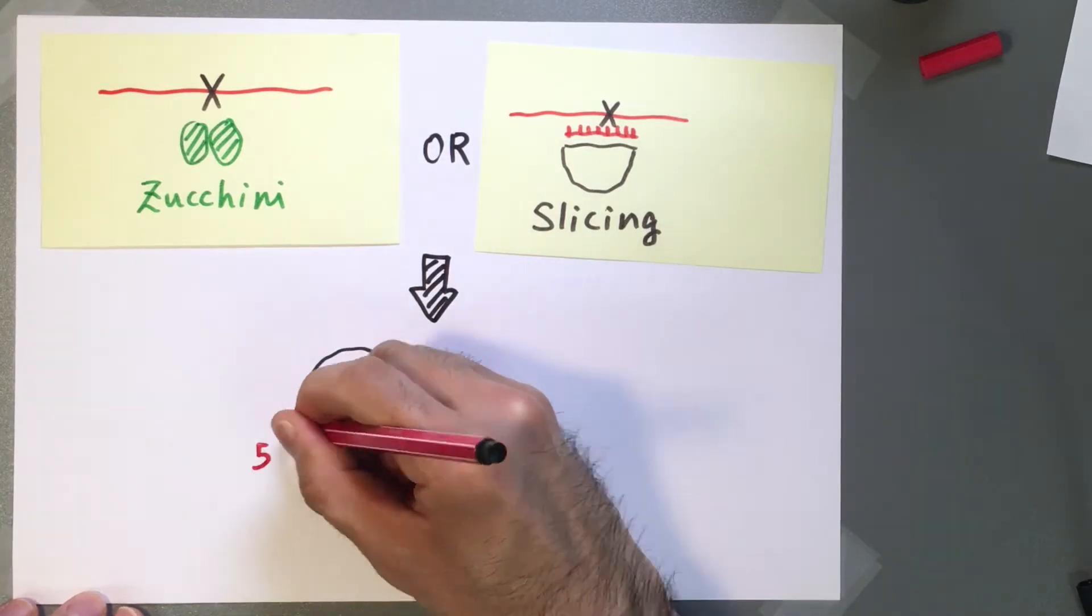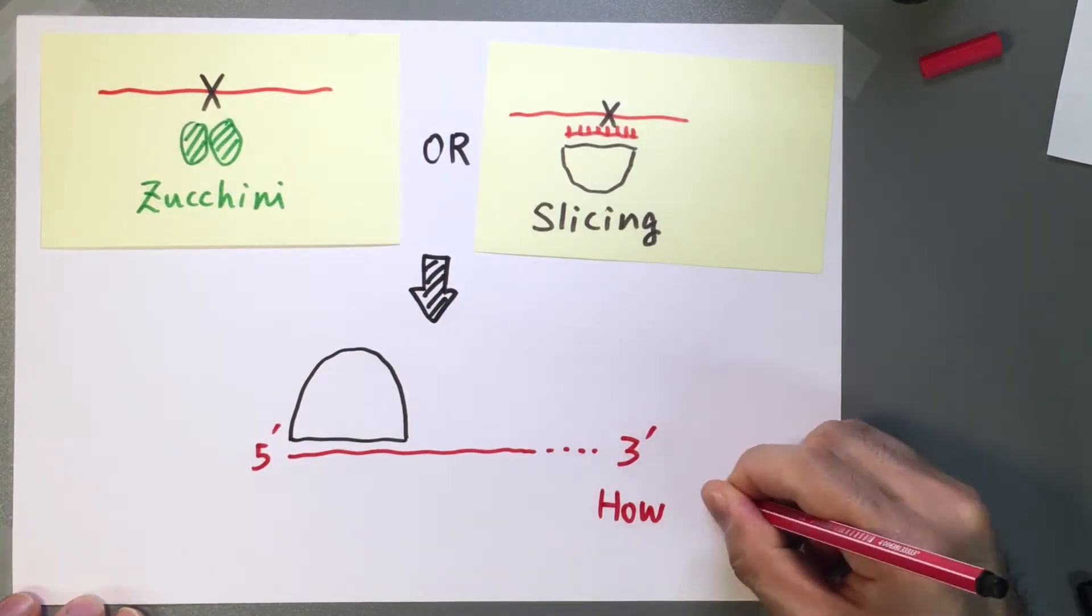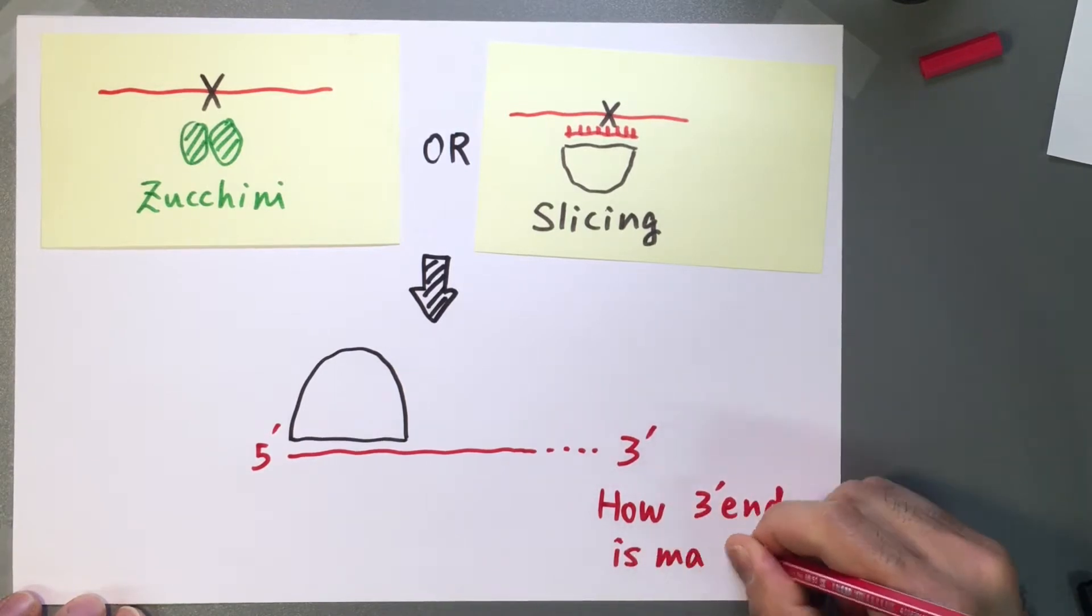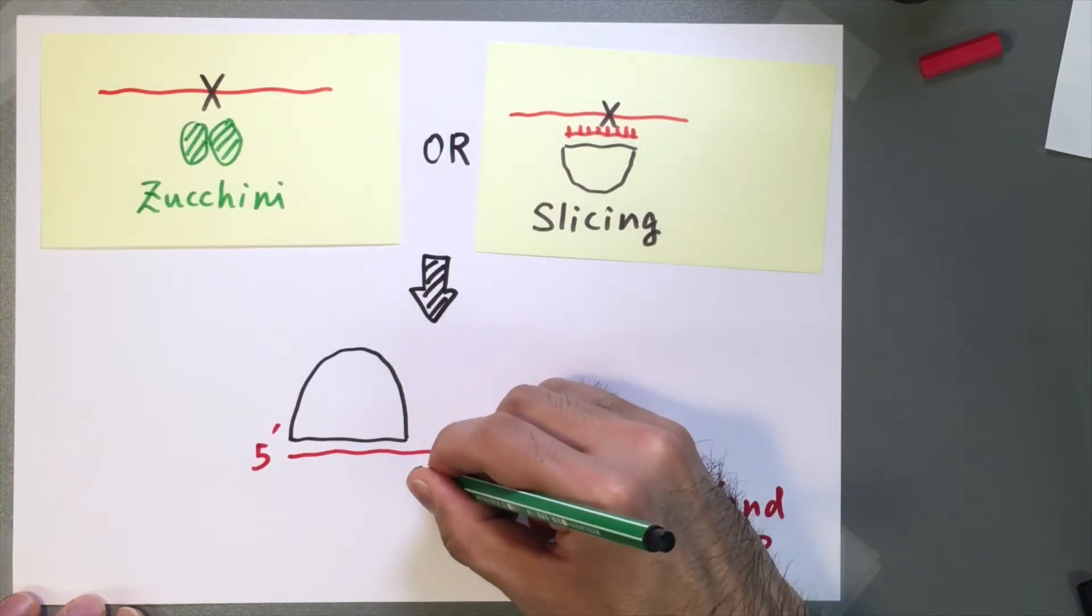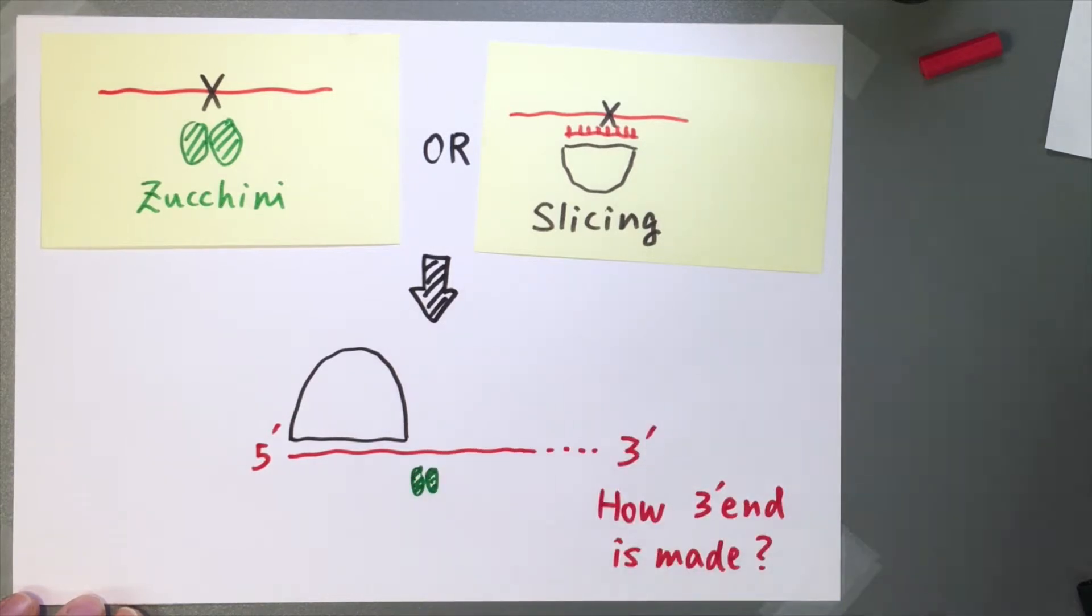How a mature piRNA from this precursor is formed was not known until recently, when work from different labs showed that the endonuclease Zucchini can also form the 3' end of mature piRNAs.